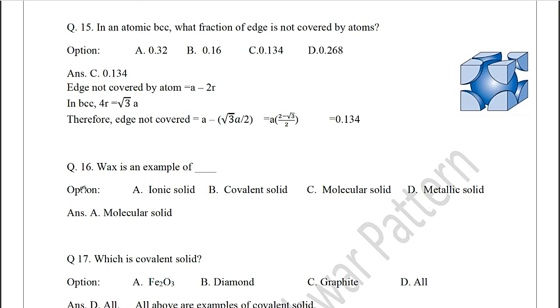Question 16: Wax is an example of ionic solid, covalent solid, molecular solid, or metallic solid? And the correct option is molecular solid.